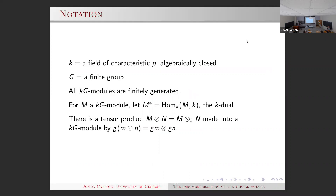We're over a field of characteristic p. I'm taking it to be algebraically closed, but that's not really necessary. G is a finite group. All modules are finitely generated — that's a slight lie, as we will even see some infinitely generated modules in this talk, but the default situation is finitely generated. The algebra KG is a very nice algebra. It's self-injective, which means projective modules and injective modules coincide. It's also a Hopf algebra, so you've got a tensor product given by the diagonal operation. The dual of a module is also a KG module using this Hopf algebra structure.